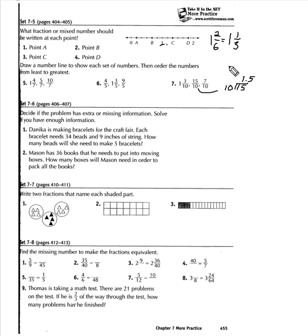So the order would be seven-tenths, then one and three-tenths, and then finally one and five-tenths.